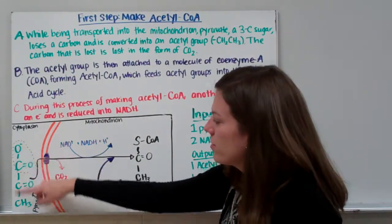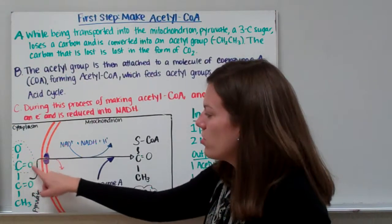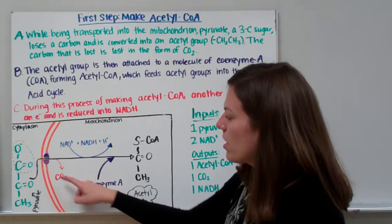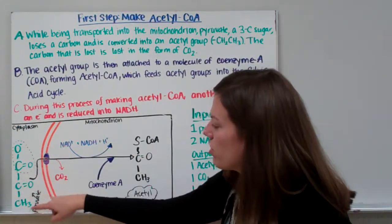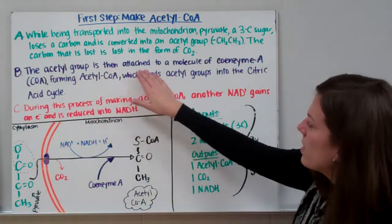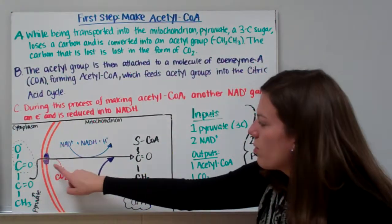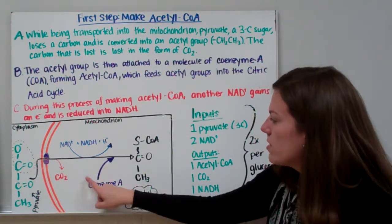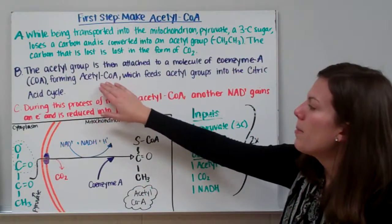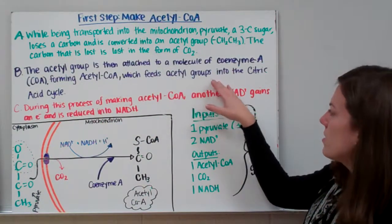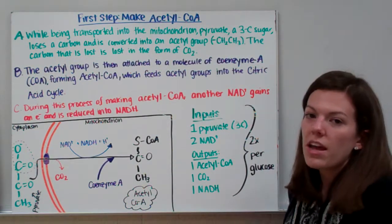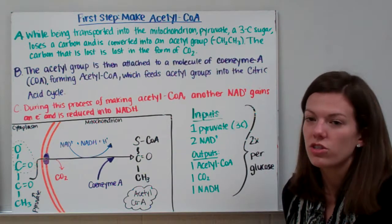We're taking our pyruvate, losing one carbon attached to two oxygens as carbon dioxide, and the other two carbons from the pyruvate are turned into an acetyl group. The acetyl group is then attached to a molecule of coenzyme A, forming acetyl-CoA. Coenzyme A acts like a carrier, delivering acetyl groups into the citric acid cycle.